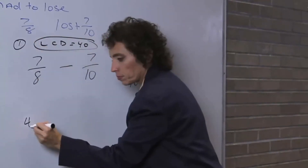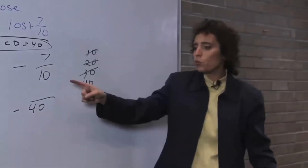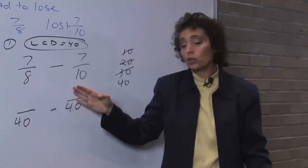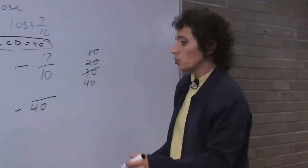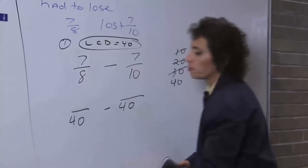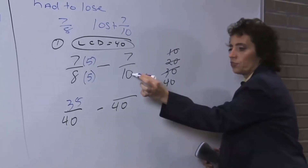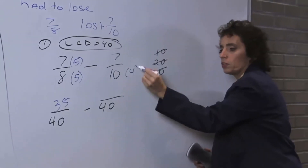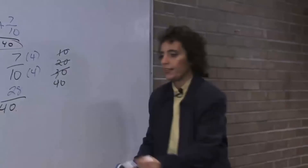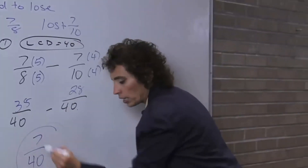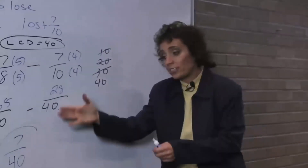Some people said they wanted to use 80 — that would work, 8 and 10 both go into 80, but that's not the least common denominator. So the LCD is 40. Building: 8 times 5 is 40, so 7 times 5 is 35. 10 times 4 is 40, so 7 times 4 is 28. 35 minus 28 is 7. So the answer is 7 fortieths — that's how much of a pound he has to lose to make weight. And that's the end of adding and subtracting fractions.